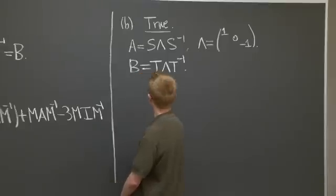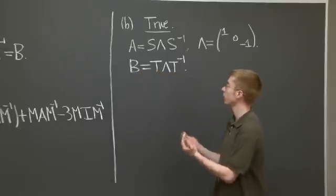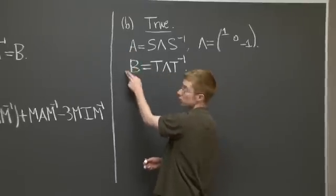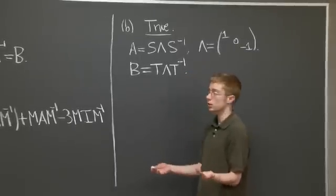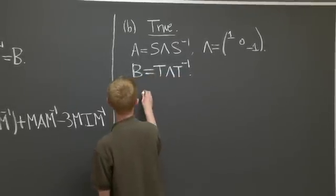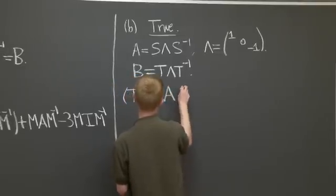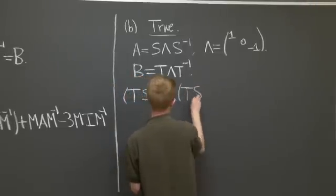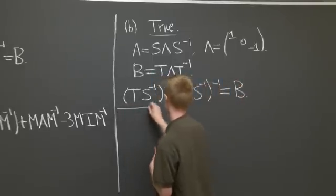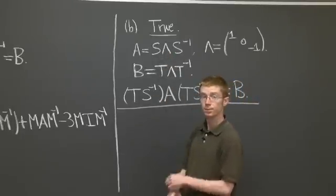Now I'll let you, so before we check it, let's just save the point. The point is if two matrices are similar to the same matrix, then they're similar to each other. Similarity is a transitive relation. And I'll just let you check that you can take T S inverse A times T S inverse inverse, and you'll get B. This follows directly from just these two relations.